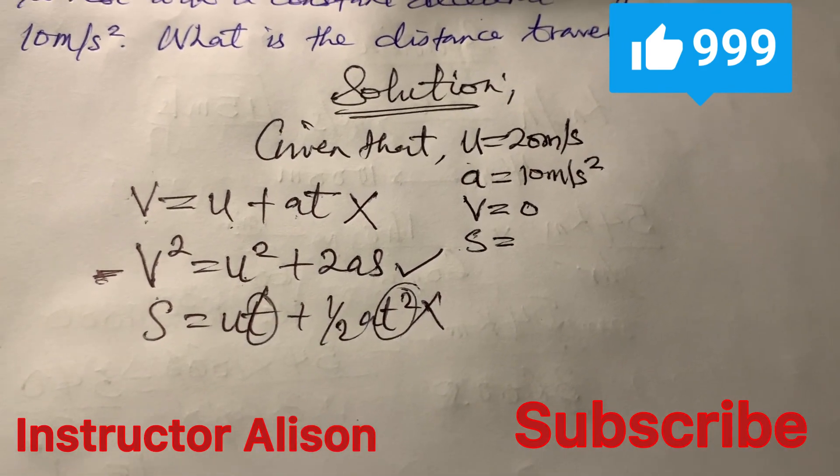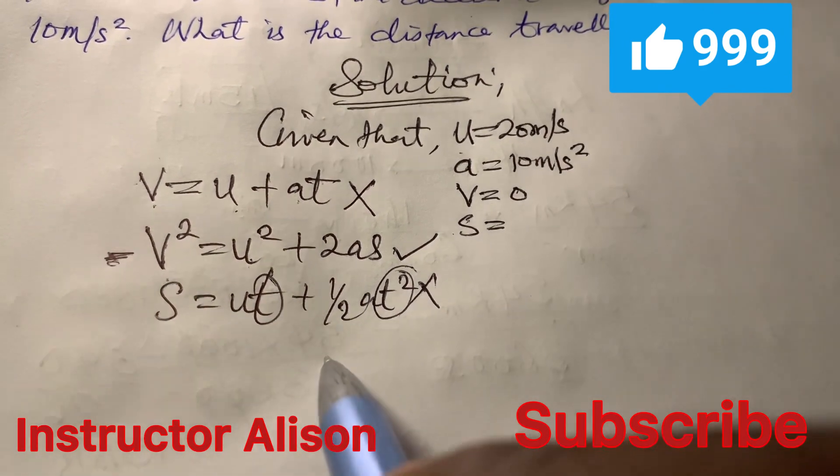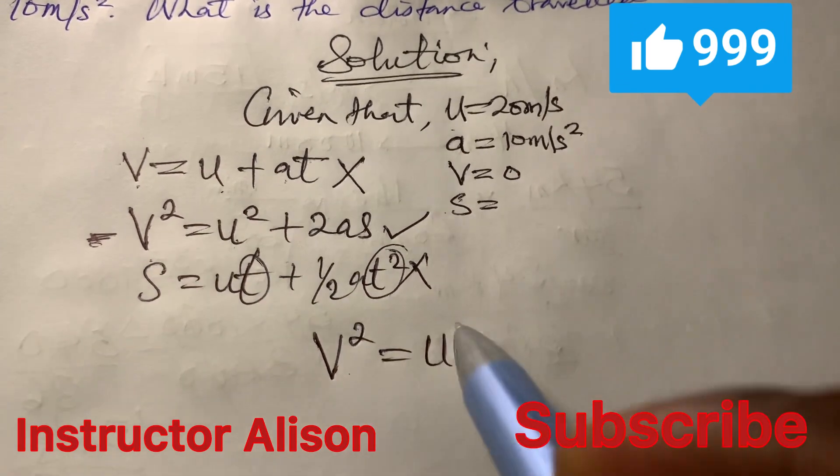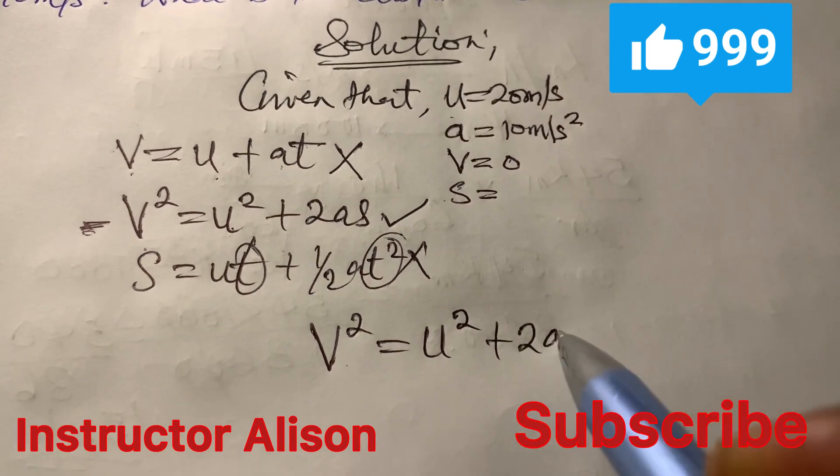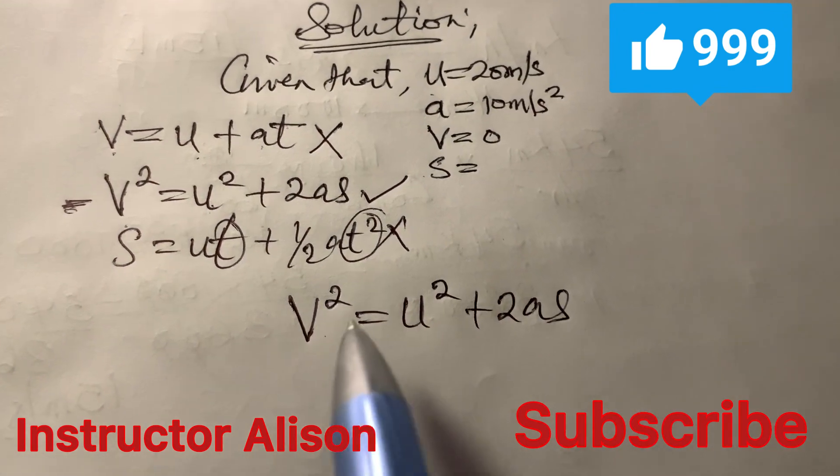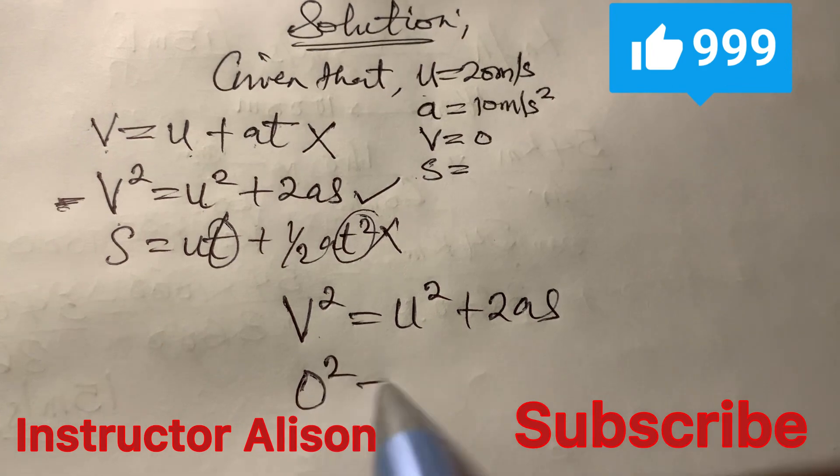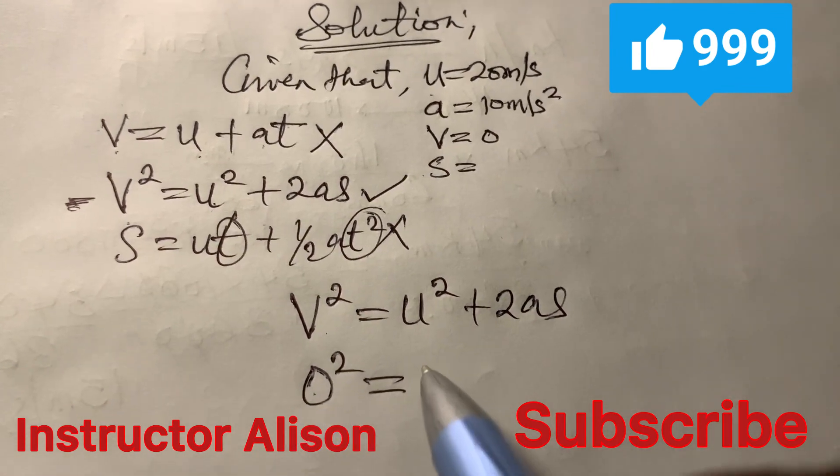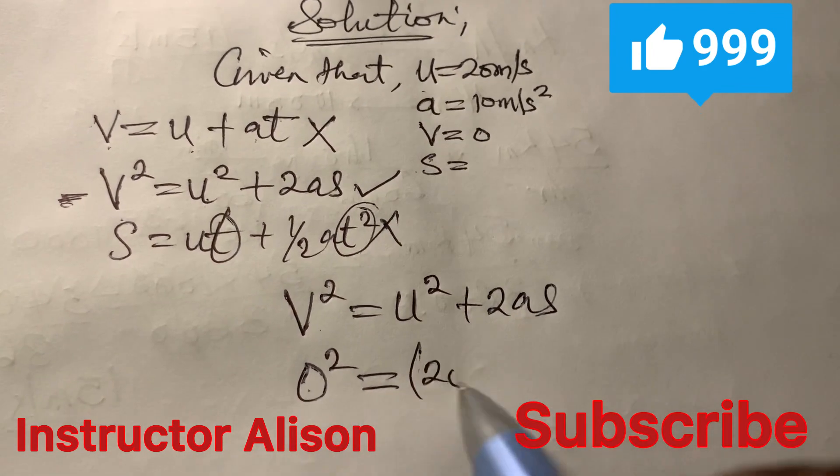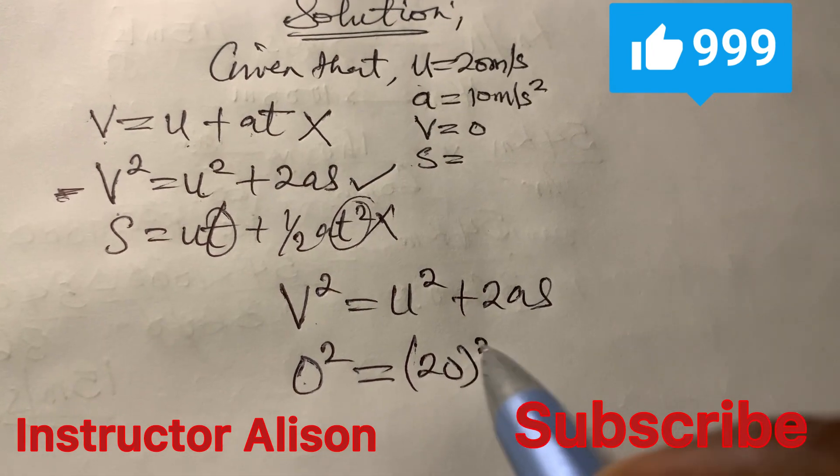If we plug the parameters given into this particular equation then we have that V is 0. Even if it's square 0, it's still going to be 0. And then U will have that to be 20 squared.